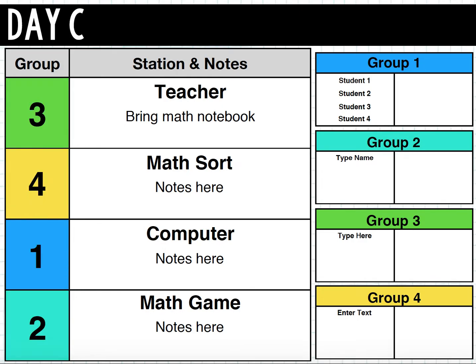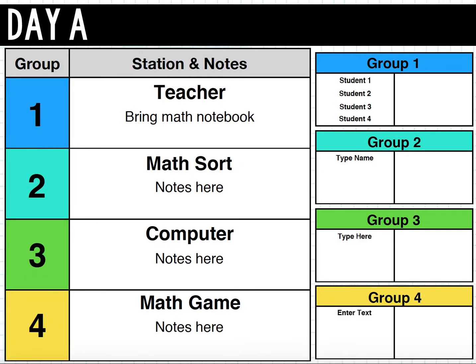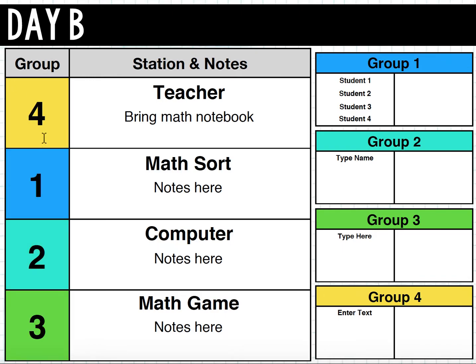So what I've done is I've labeled each rotation day A, B, C, and D, and it's already listed with the group numbers, space for the student's name. And on day B, it's automatically, the group number has been switched. So students will know exactly where to go.